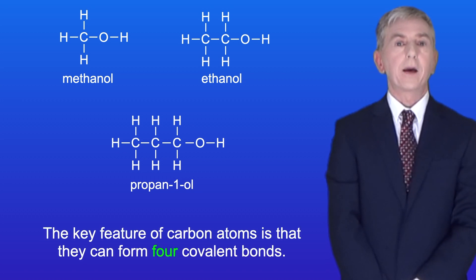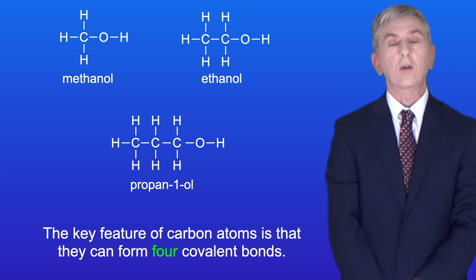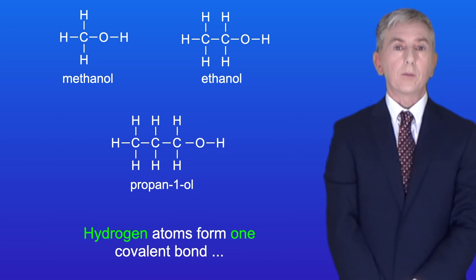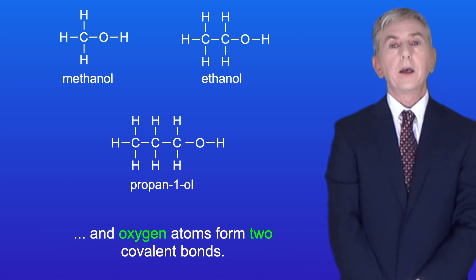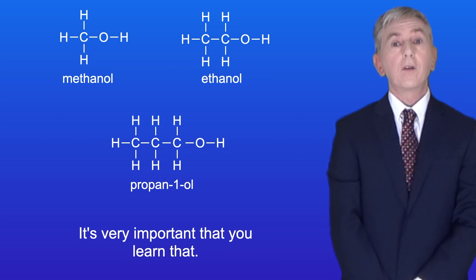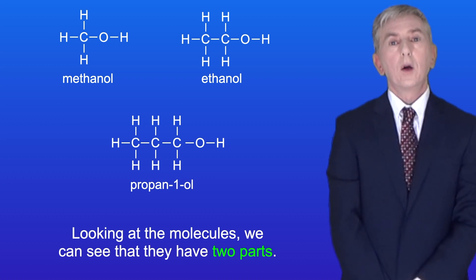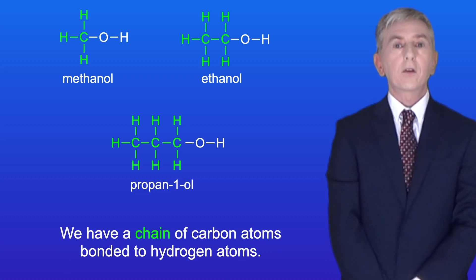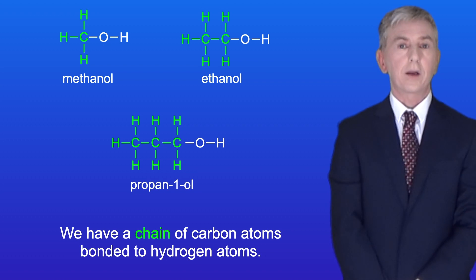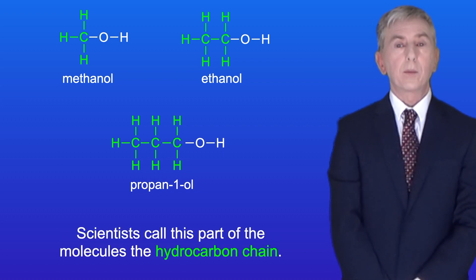The key feature of carbon atoms is that they can form four covalent bonds. Hydrogen atoms form one covalent bond and oxygen atoms form two covalent bonds, and it's very important that you learn that. Looking at the molecules, we can see that they've got two parts. We've got a chain of carbon atoms bonded to hydrogen atoms, and scientists call this part of the molecule the hydrocarbon chain.